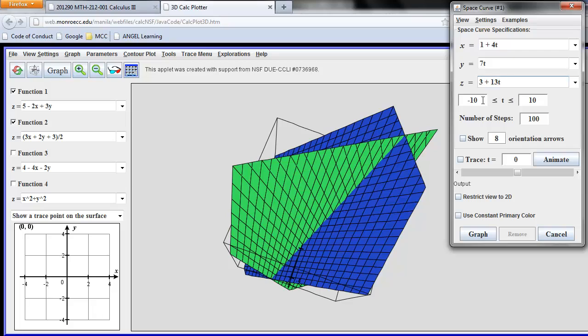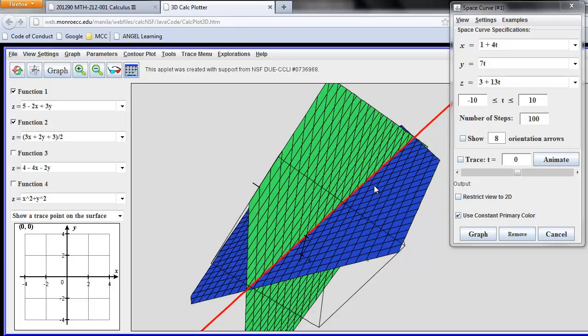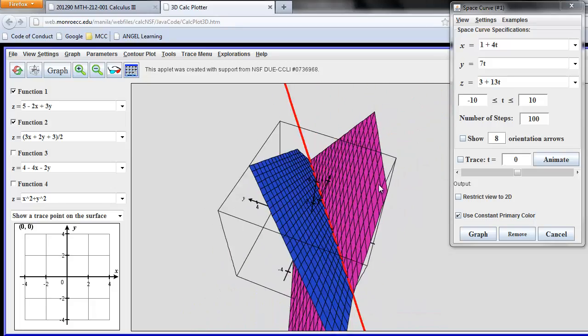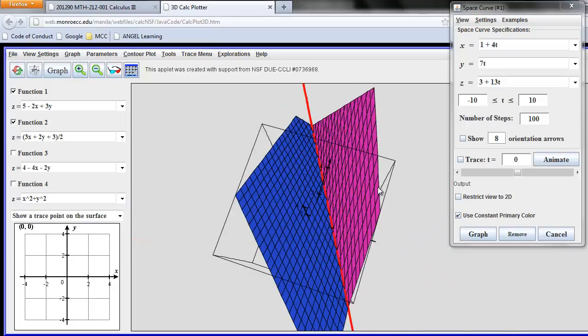Choosing t's range of values, negative 10 to 10 is quite sufficient, 100 steps. Since it's a straight line, probably not necessary, but we'll leave it there. I usually like this to be a constant primary color since it's a straight line. So I'll click there, and that happens to also graph when I click there. You can see now that it looks like a pretty good fit for the line of intersection. Let's rotate it around and convince ourselves that it looks like it's in the right place. And it looks like it is.